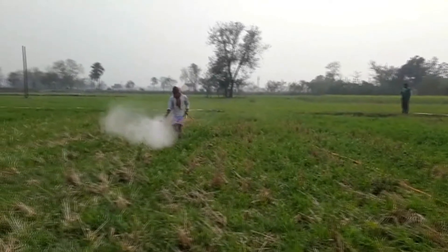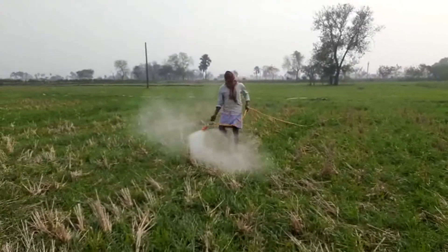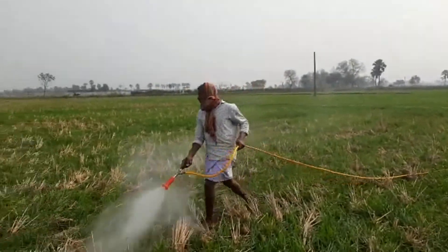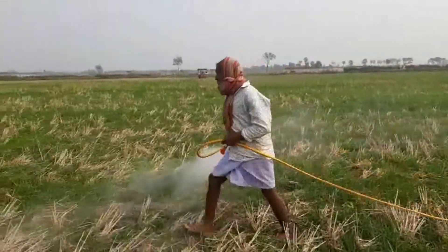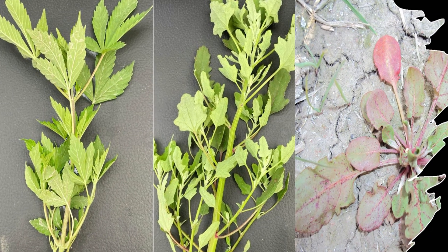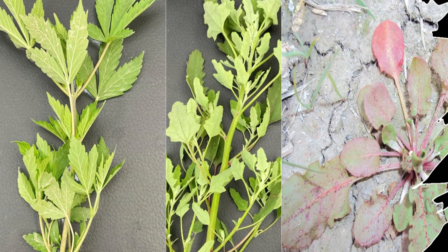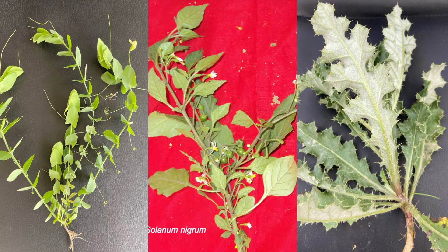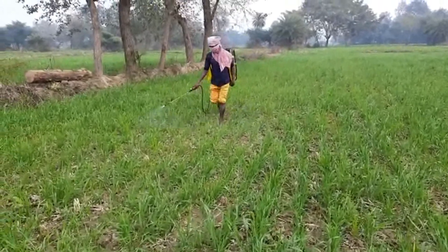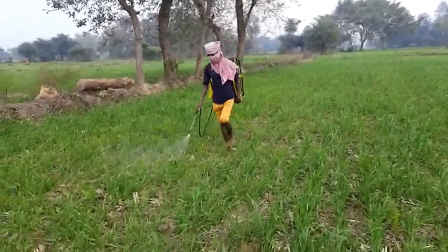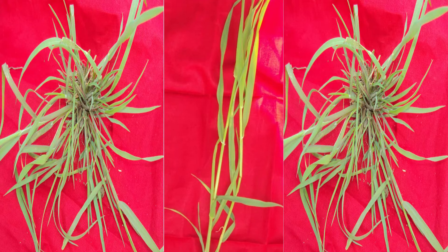Challenge: Awareness about integrated weed management amongst the farmers of Bihar is limited, and many farmers are using a blend of herbicides without adequate knowledge. Solution: Broadleaf weeds are found in over 70 percent of wheat fields in Bihar, and can be controlled by cost-effective herbicides such as metsulfuron-methyl, carfentrazone-ethyl, and 2,4-D.